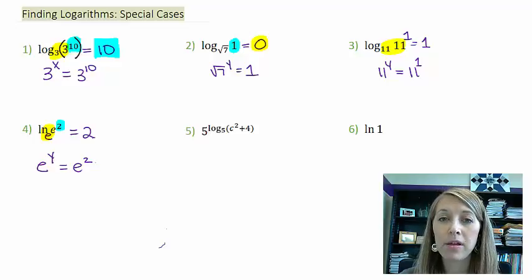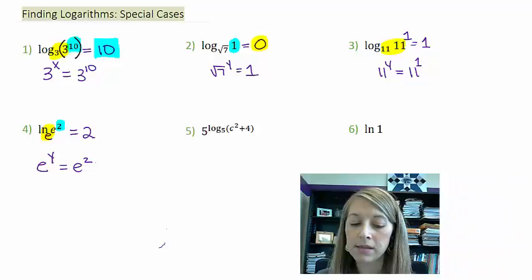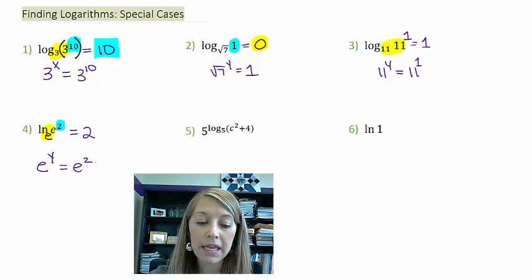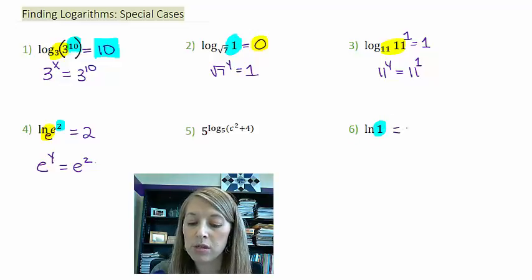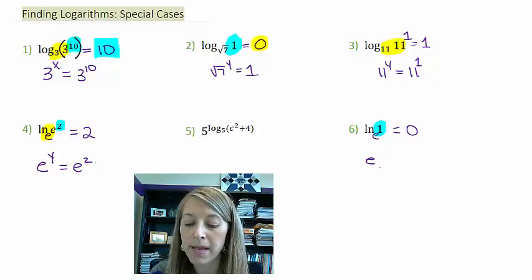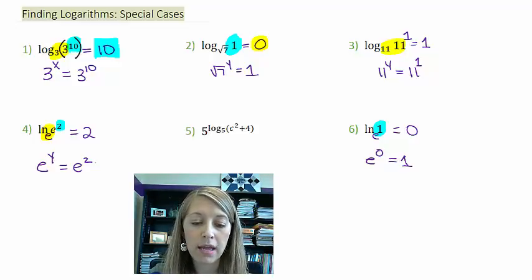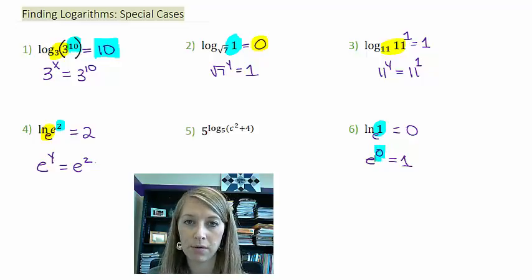Number five is probably the most difficult one, so I'm going to skip it for a moment. Let's move on to number six. Number six mimics what happened in number two. Any time I have one in my argument, that guarantees my answer is going to be zero. My exponential question here since I'm base e is e to the zero power is equal to one. We know that the only way I can get a one in my argument is if my exponent is zero.